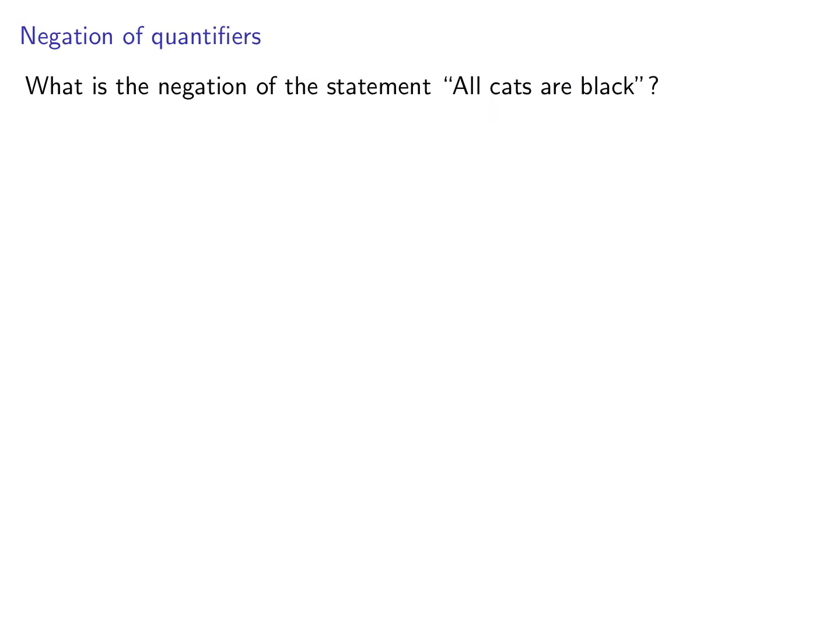Let's get back to an example that we did in one of the previous videos. What is the negation of the statements all cats are black? We actually already written down in that example. To say that it is not true that all cats are black, you just need to say that there are some cats that are not black. So, let's unpack this and write them carefully with quantifiers so that we can see how do we negate statements with quantifiers.